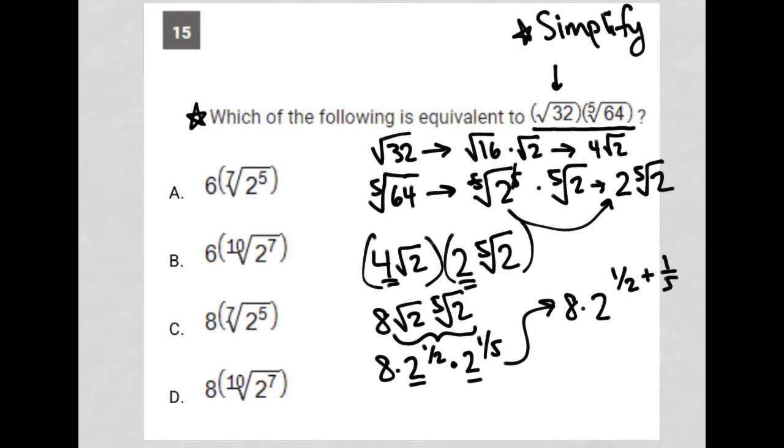In order to add fractions, I have to have a common denominator. So this becomes 8 times 2 to the 5 tenths plus 2 tenths, making 10 my common denominator there, which becomes 8 times 2 to the 7 tenths.